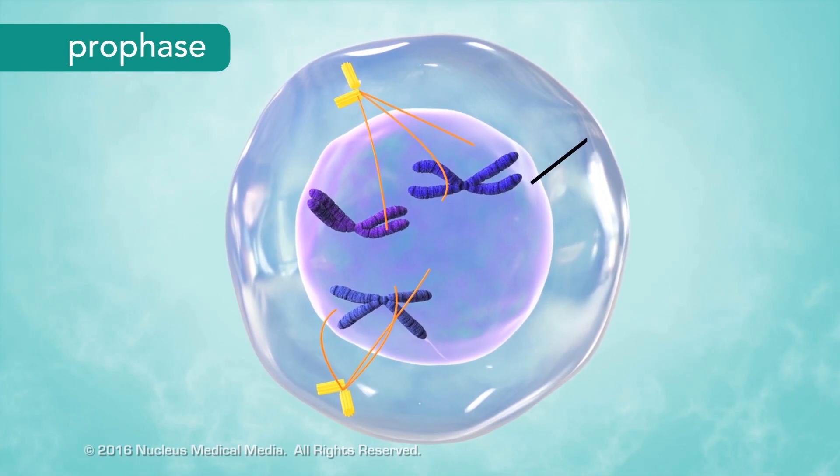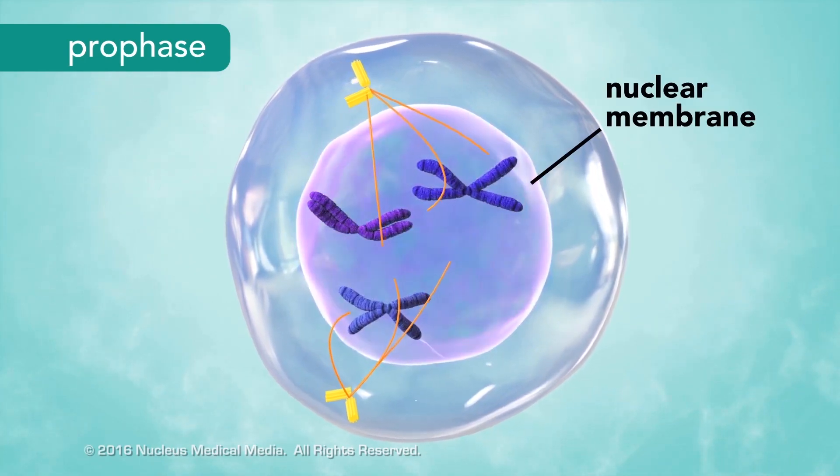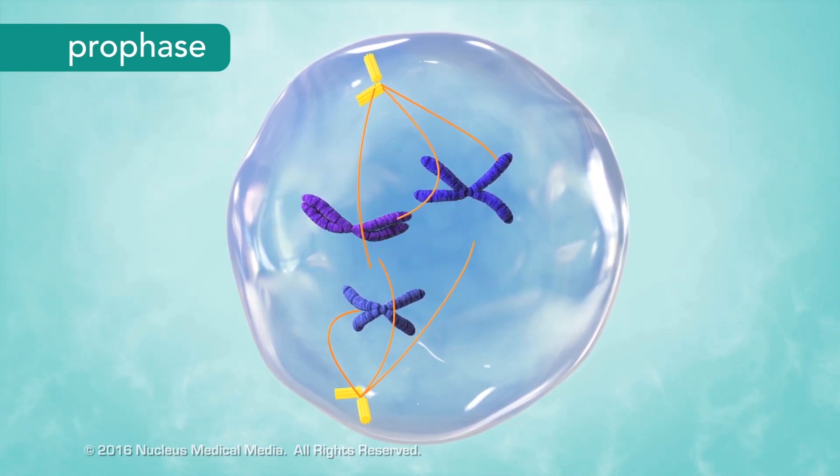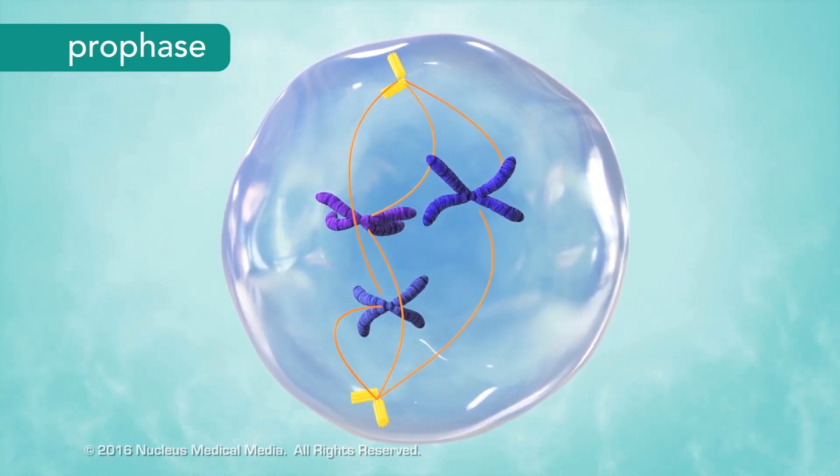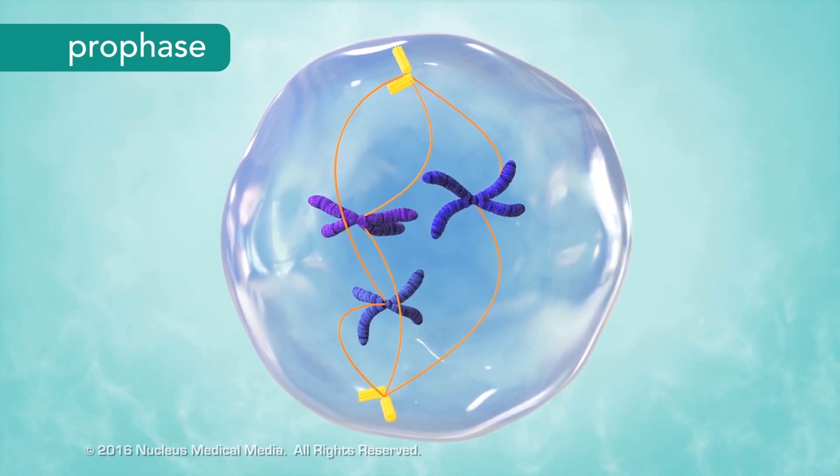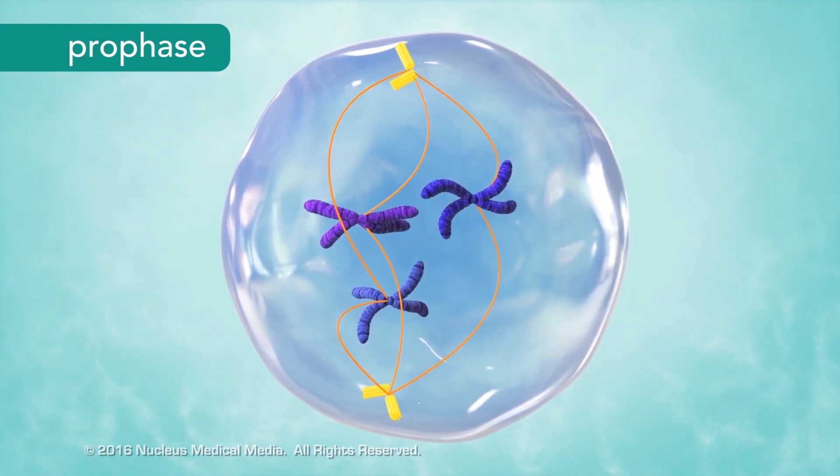While this is happening, the nuclear membrane surrounding the nucleus disappears. Now that chromosomes are no longer separated from the cytoplasm, the opposite ends of the spindle fibers can attach to the centromeres.